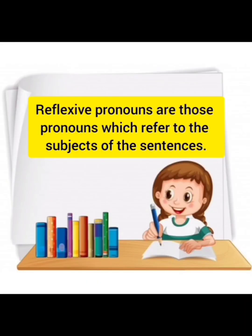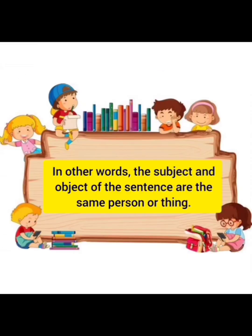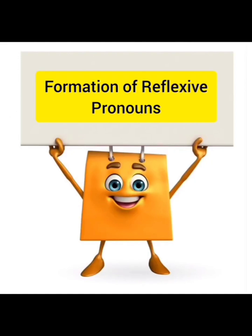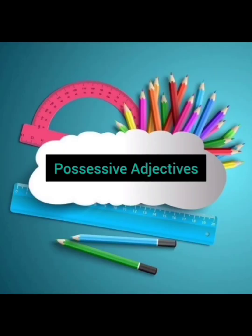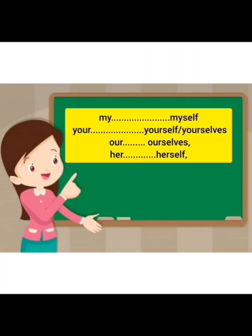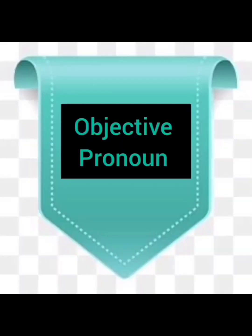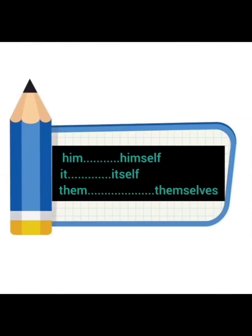Reflexive pronouns are those pronouns which refer to the subjects of the sentences. In other words, the subject and object of the sentence are the same person or thing. These pronouns are made by adding 'self' or 'selves' to the possessive adjectives or object pronouns. For example: my → myself; your → yourself or yourselves; our → ourselves; her → herself; him → himself; it → itself; them → themselves.